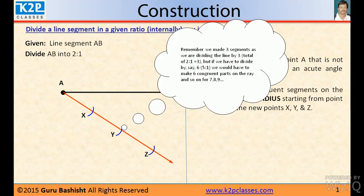And the third one. Remember, we made 3 segments. We are dividing the line by 3 because the ratio is 2:1 and the sum of the ratio is 3. If the ratio is 5:1, that is total sum is 6, we have to divide the line in 6 equal parts.